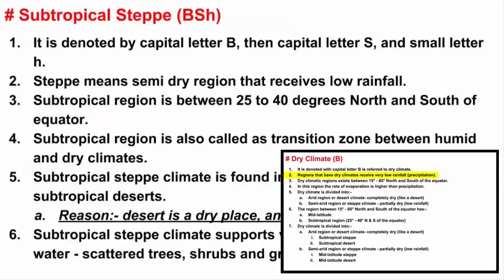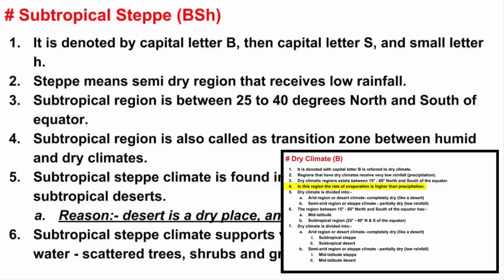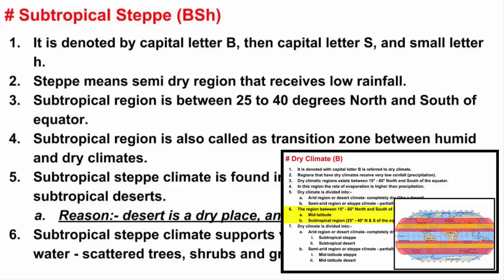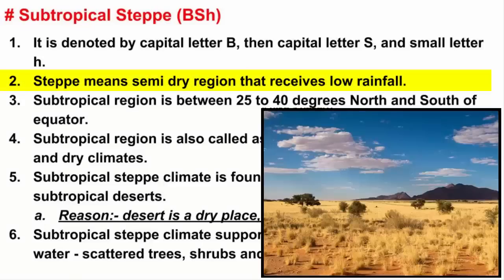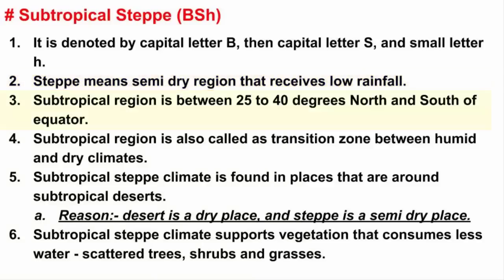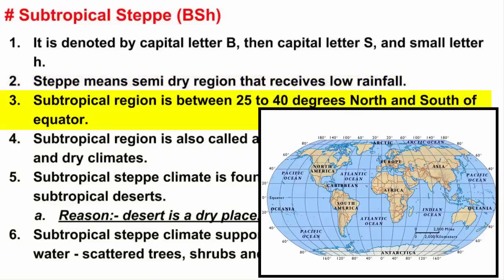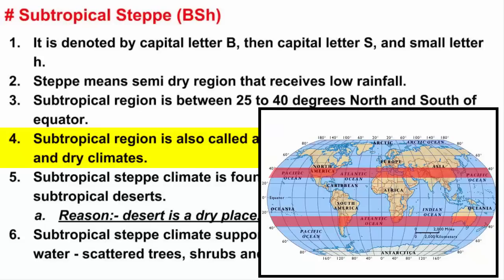In the previous video on dry climates, I explained the meaning of the word steppe and showed where the subtropical region is on the world map. Steppe means a semi-dry region, meaning it is not completely dry like a desert, but it receives very low rainfall. The subtropical region is between 25 to 40 degrees north and south of the equator, and is also called a transition zone between humid and dry climates.